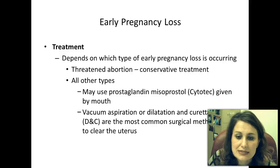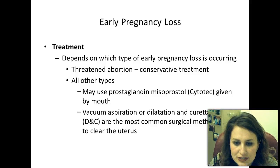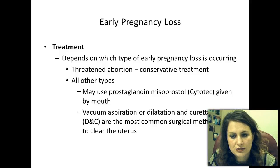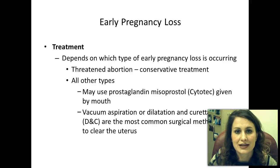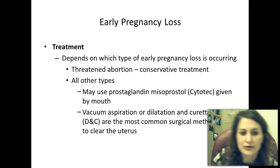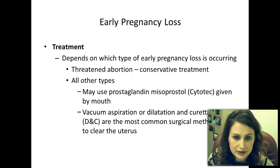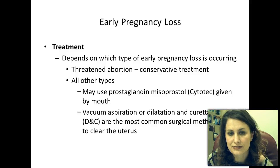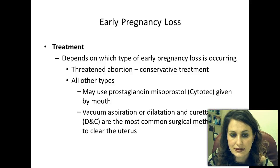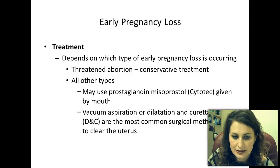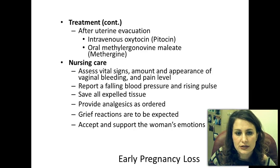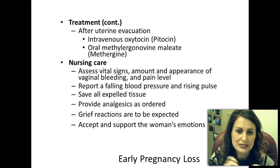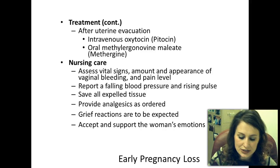All other types may use prostaglandin (Cytotec) by mouth. Vacuum aspiration or dilation and curettage (D&C) are the most common surgical methods to clear the uterus. If it is after 20 weeks, the patient may need to go through labor to deliver. For early pregnancy loss, prostaglandin is given to help pass the tissue; if that doesn't work, a D&C is performed. After uterine evacuation, Pitocin is given to contract the uterus, close down the blood vessels, and prevent hemorrhage. Methergine by mouth accomplishes the same effect.